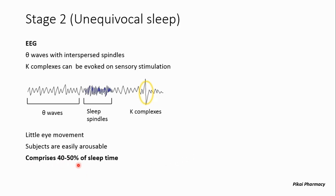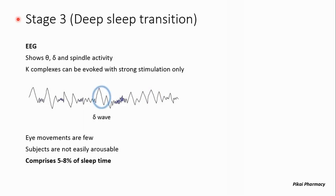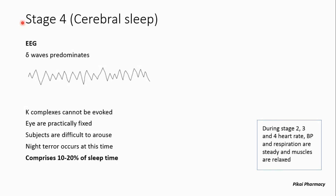Stage 2 comprises 40 to 50 percent of total sleep time. Stage 3 is also called deep sleep transition. The EEG shows theta, delta, and spindle activity, and K-complexes can be evoked only with strong stimulation. This is why subjects are not easily arousable. Eye movements are very few, and stage 3 comprises 5 to 8 percent of total sleep time.